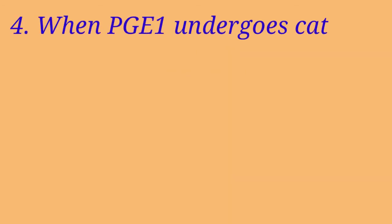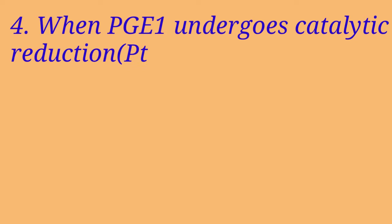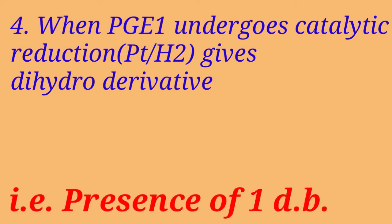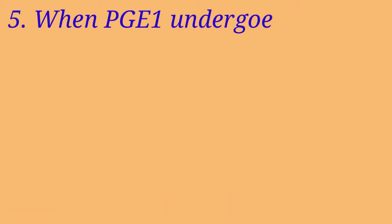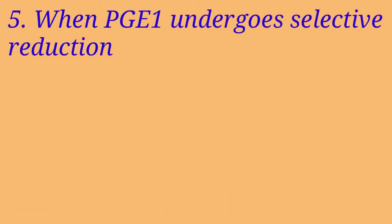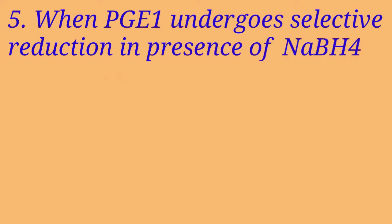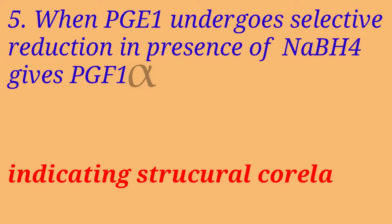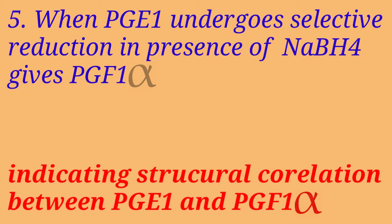When PGE1 undergoes catalytic reduction in the presence of platinum and hydrogen it gives a dihydro derivative, indicating the presence of one double bond. Further, when PGE1 undergoes selective reduction in the presence of sodium borohydride it gives PGF1α. This reaction established the structural correlation between PGE1 and PGF1α.